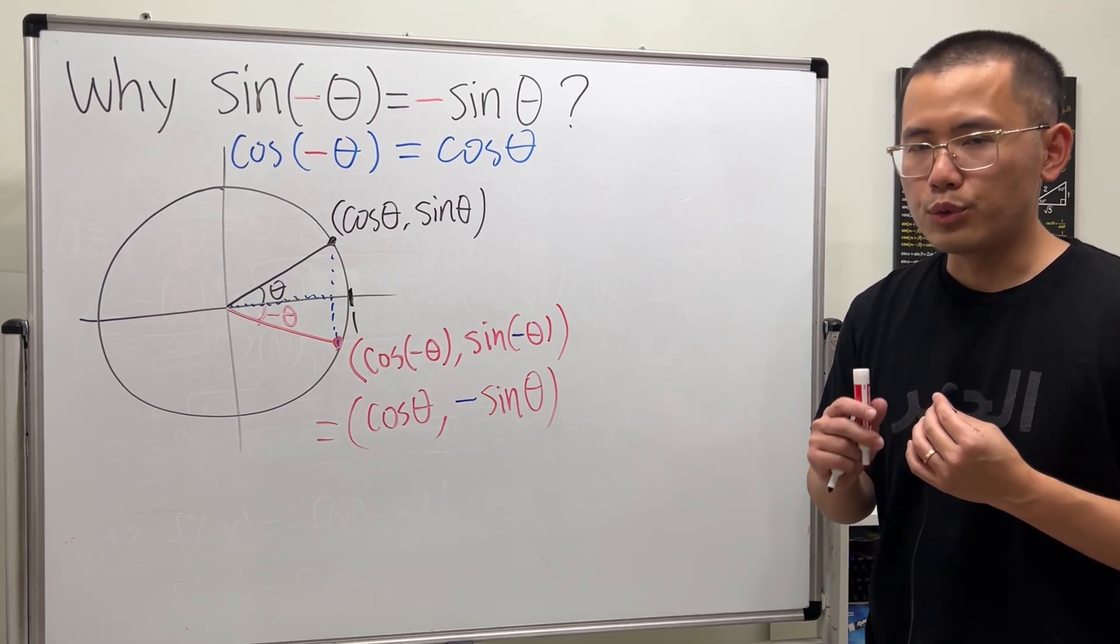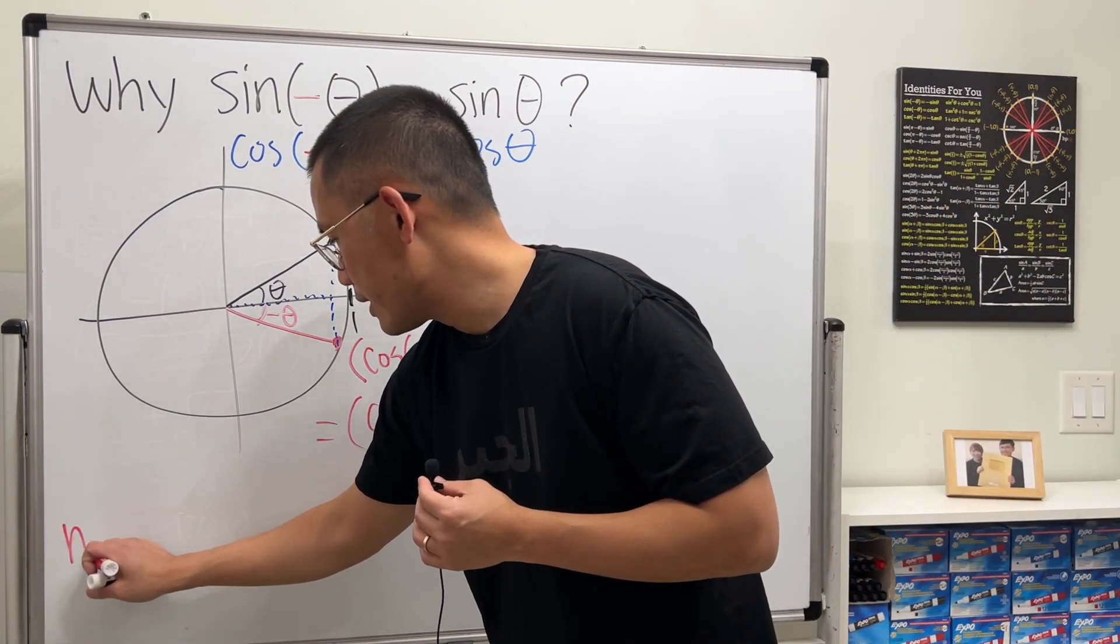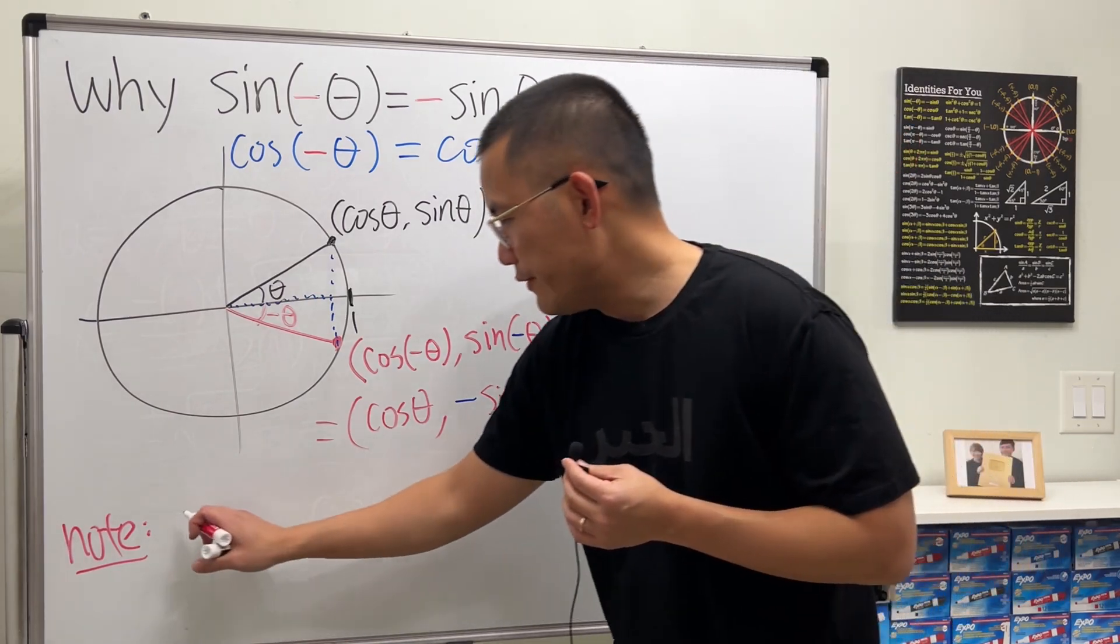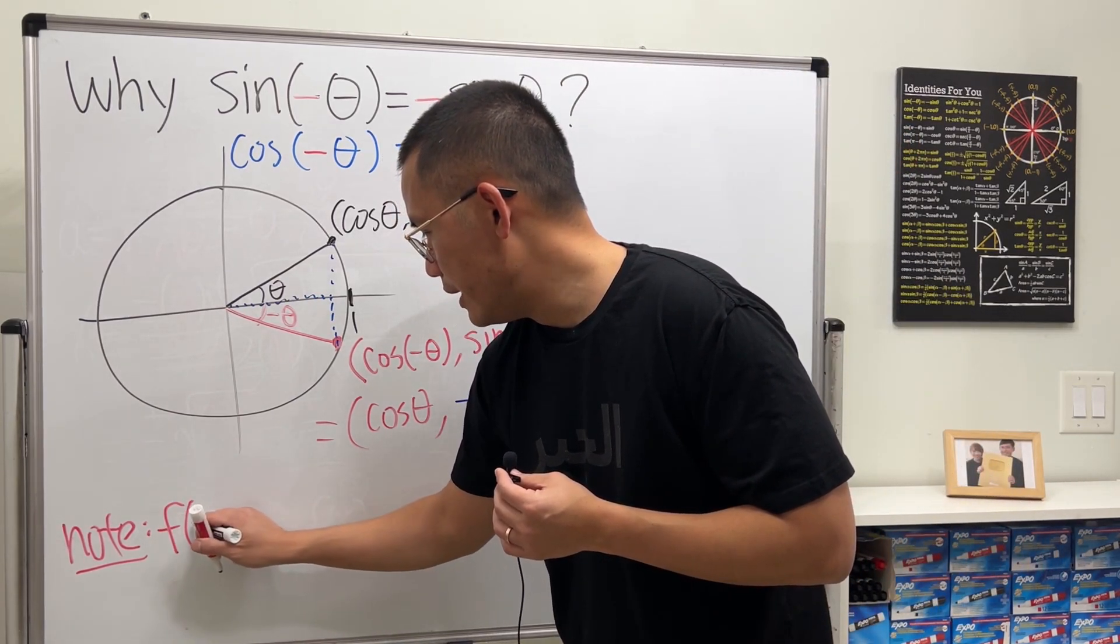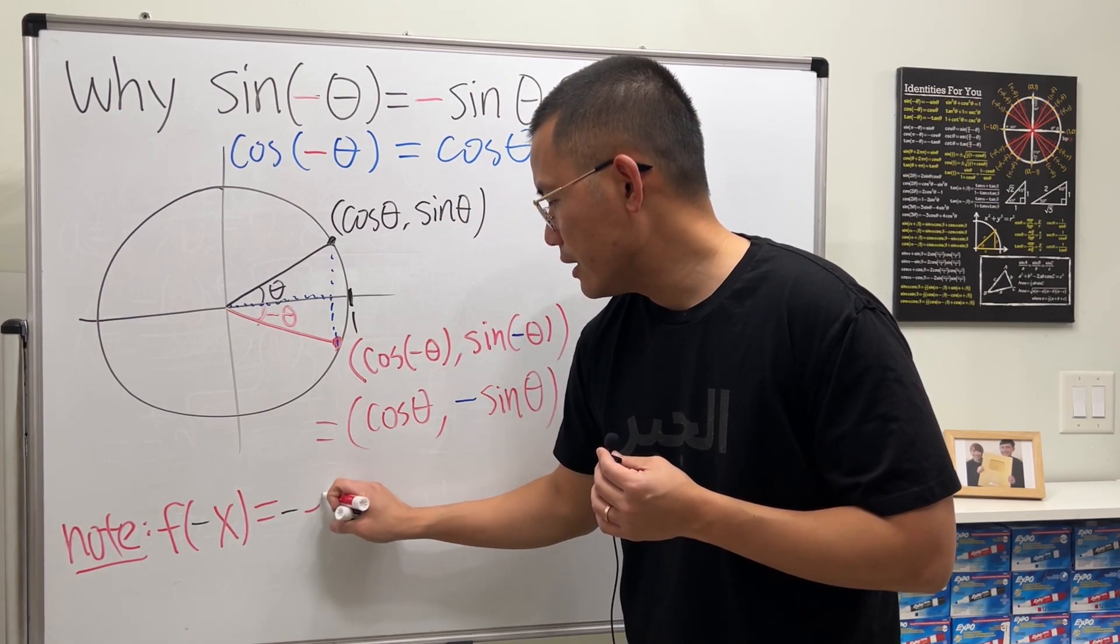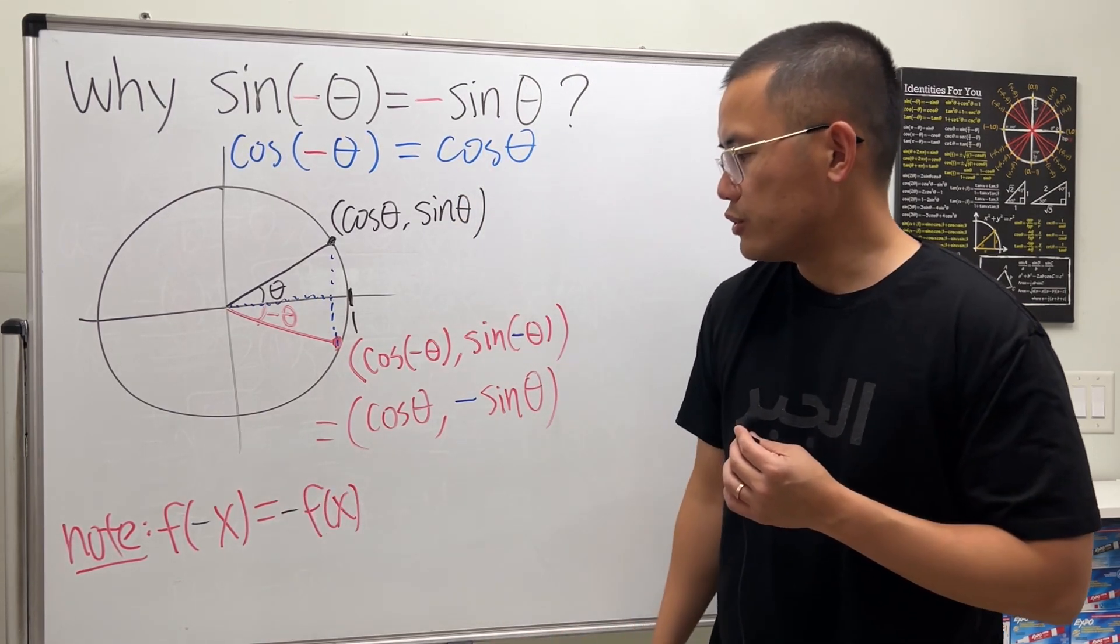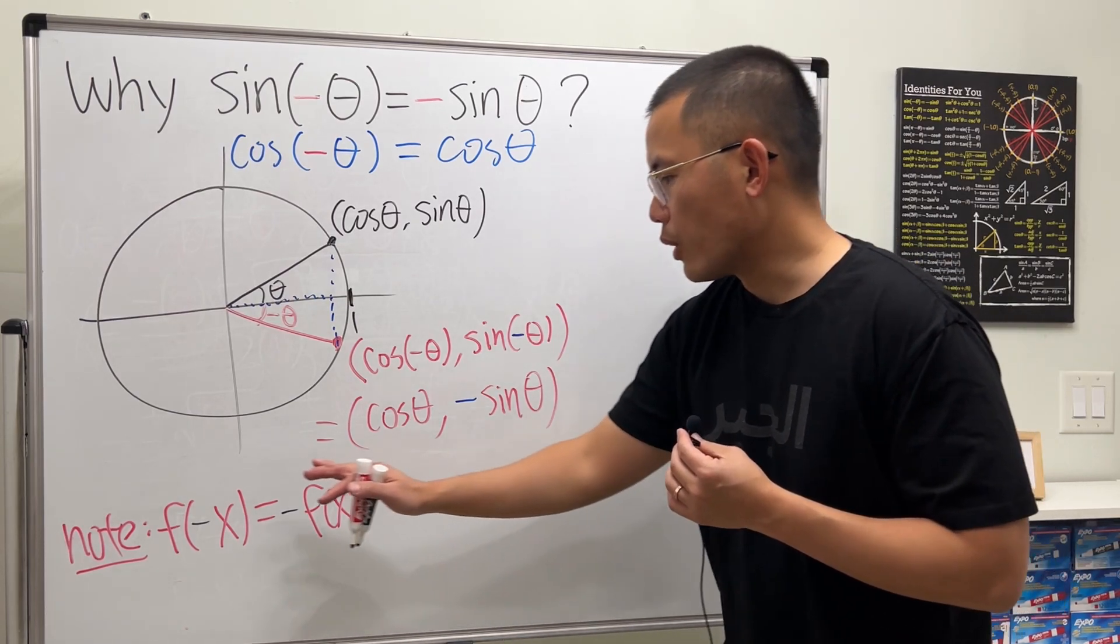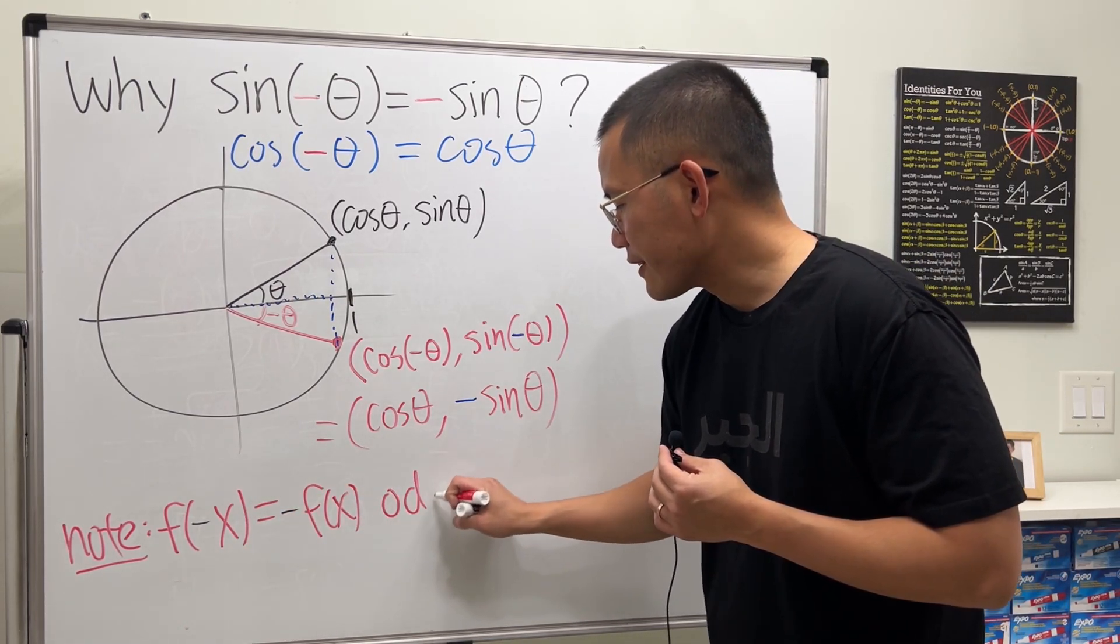Okay. And now here are two terms that you really have to know. So let me write it down right here for you guys. So suppose we have a function f. If you have f of negative x, if you can put a negative on the outside and then the original function back, if this is true for all x, then we call this function an odd function.